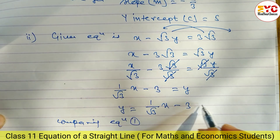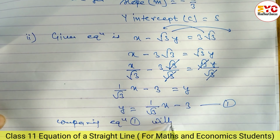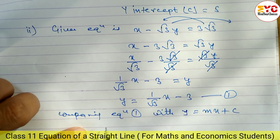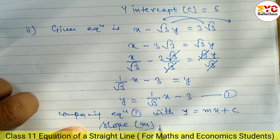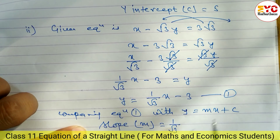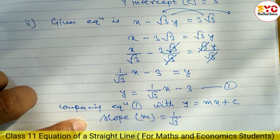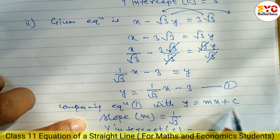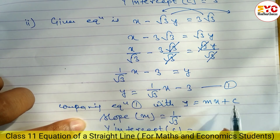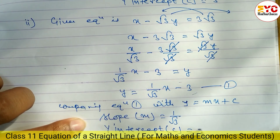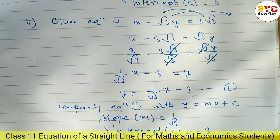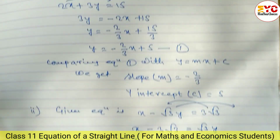Comparing equation 1 with y = mx + c, slope m = 1/√3. For y-intercept, c = -3 (we take it with sign). So slope is equal to 1/√3 and y-intercept is equal to -3.